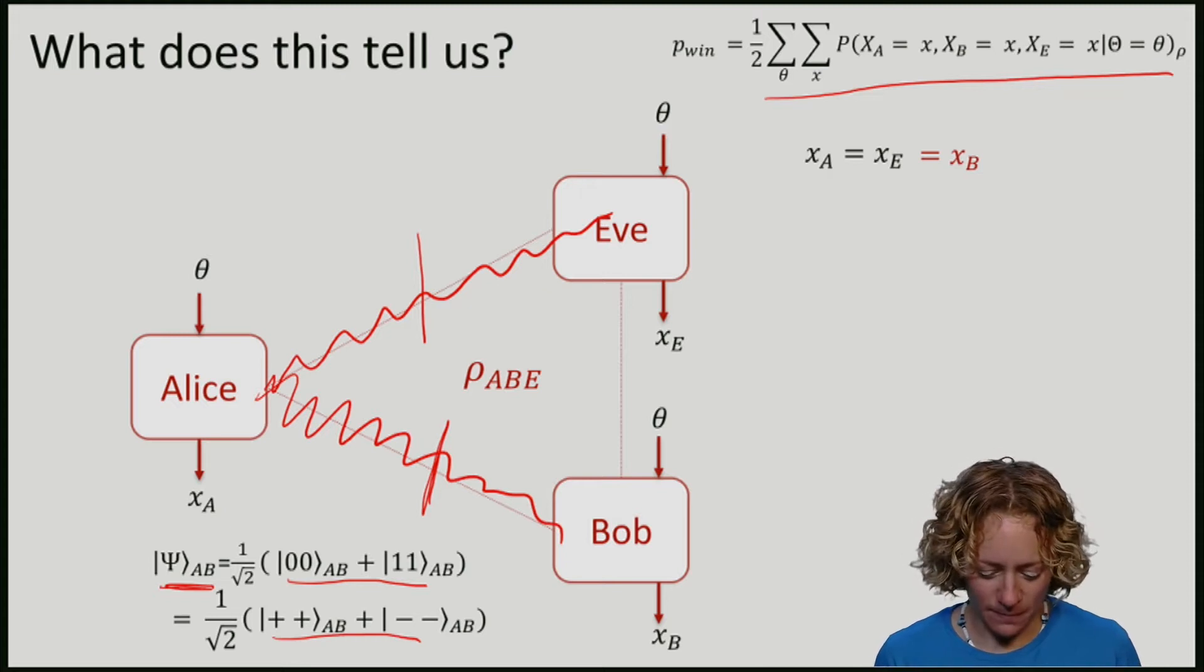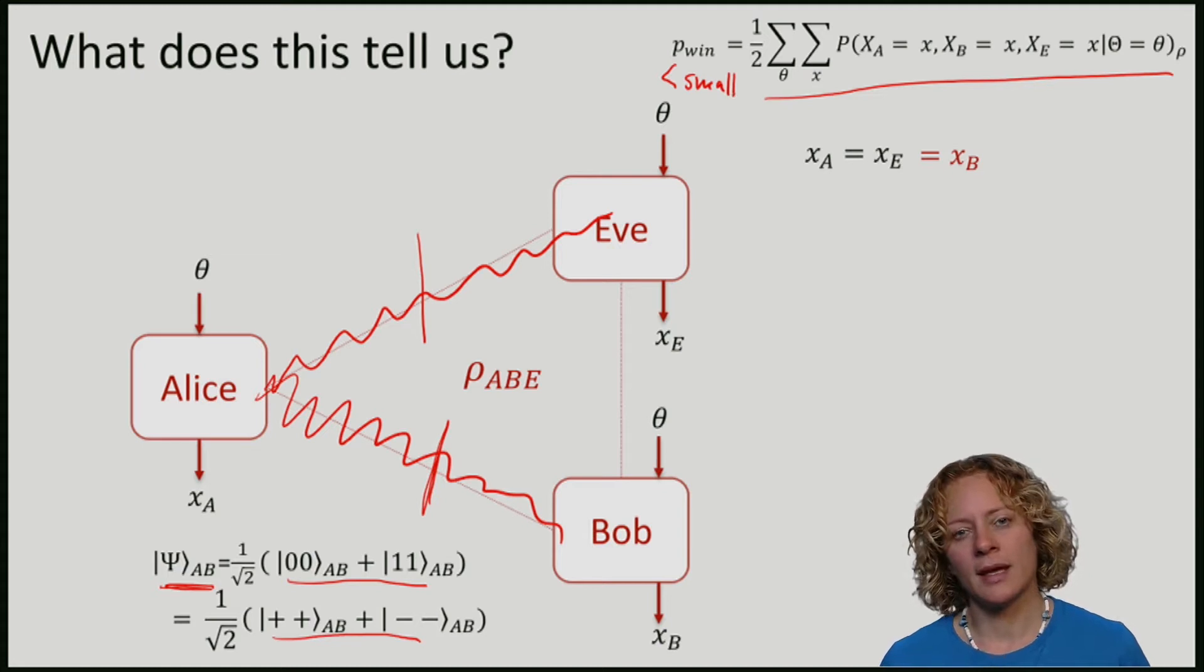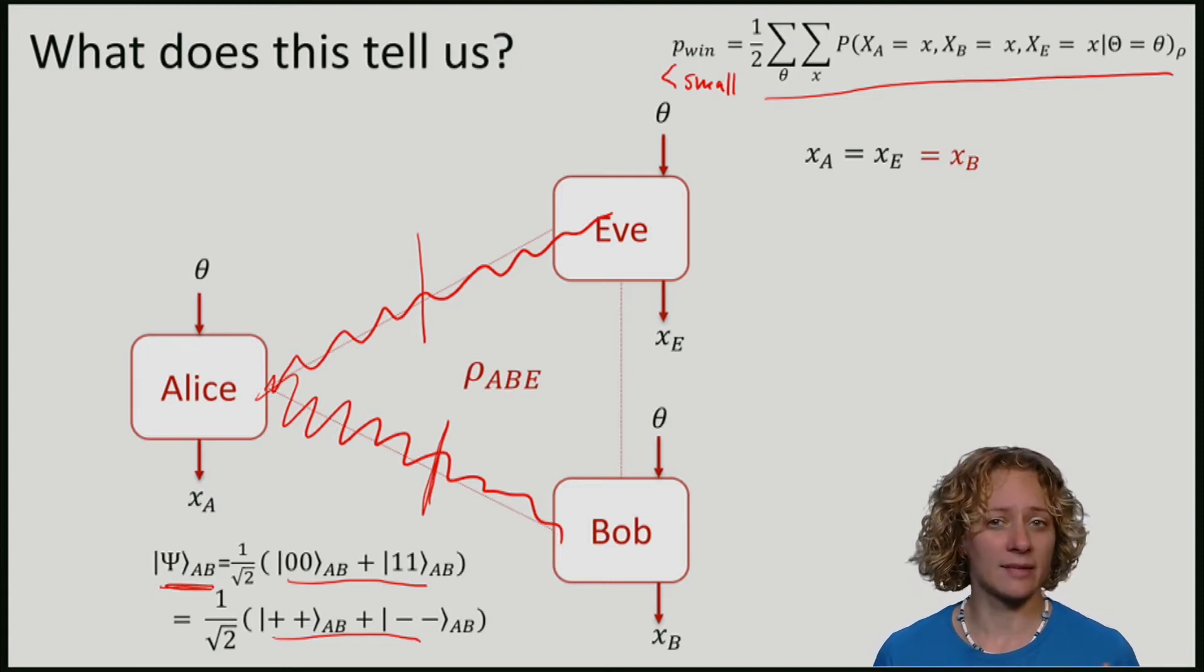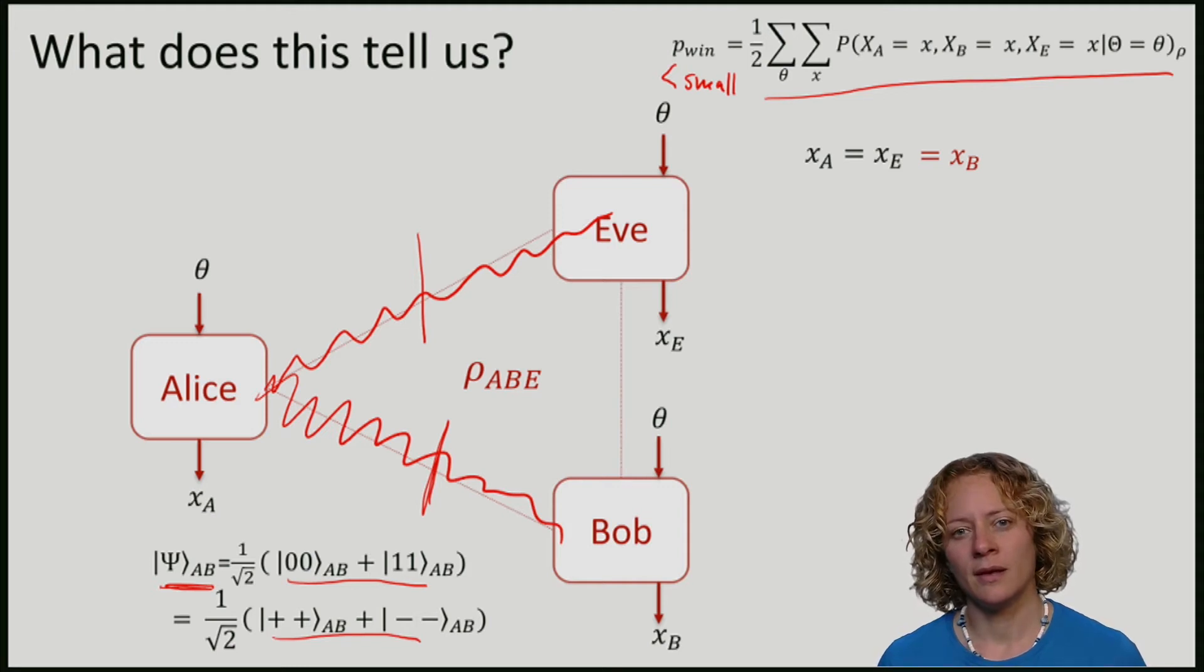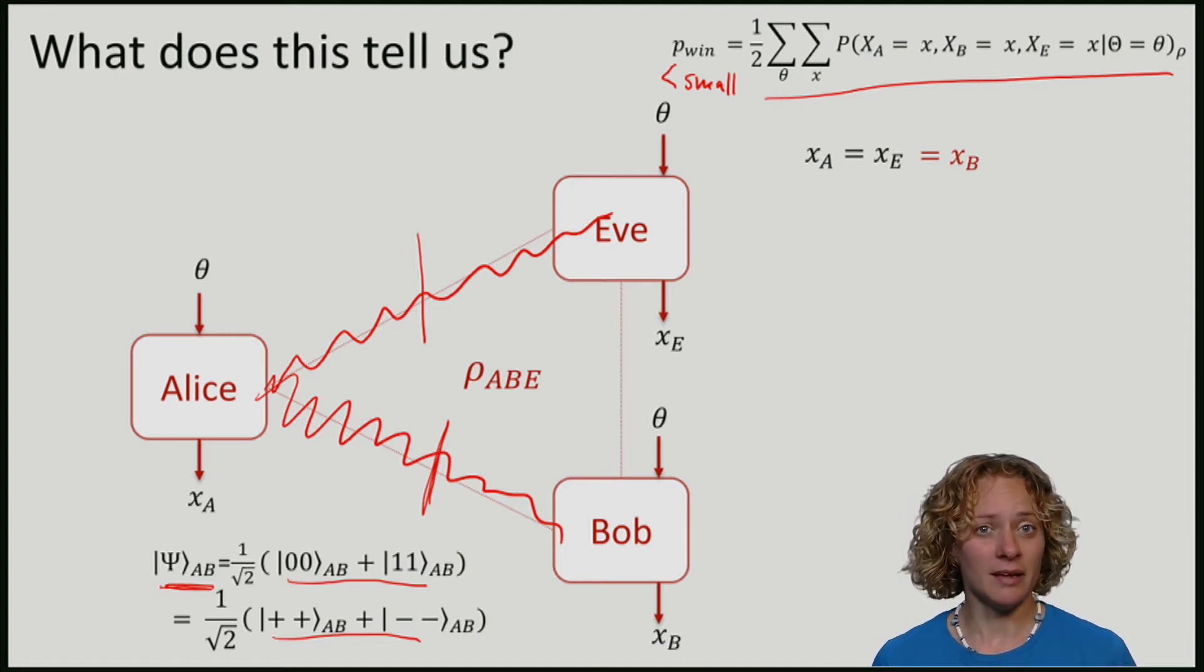Note that one way to read the winning probability of the guessing game is as follows. If the probability to win the game is small, then this also means that if Alice and Bob agree, namely Alice and Bob manage to give the same answer, then the probability that Eve also agrees, namely that Eve guesses the bit x_A = x_B, is very small. This means that if Alice and Bob actually observe correlations similar to the EPR pair, then they know that Eve must have a large amount of uncertainty, namely it is difficult for her to guess x_A or x_B.